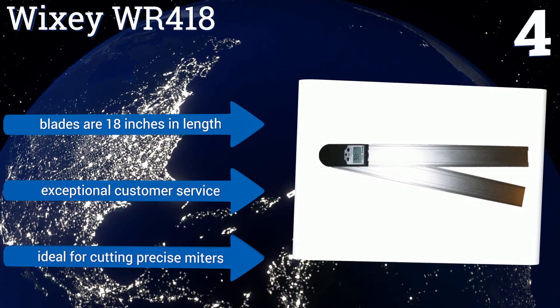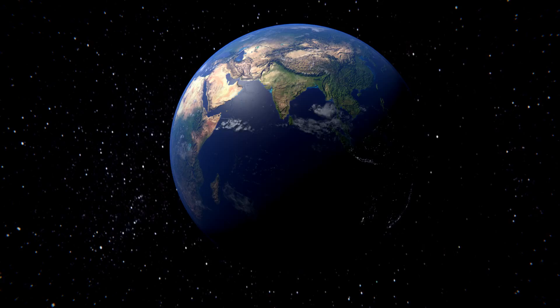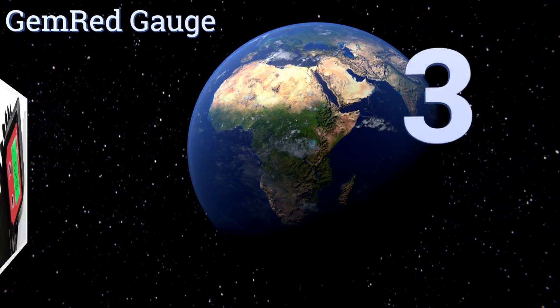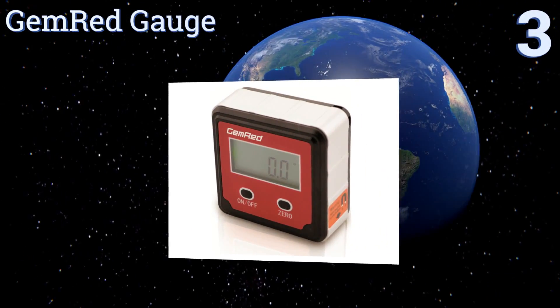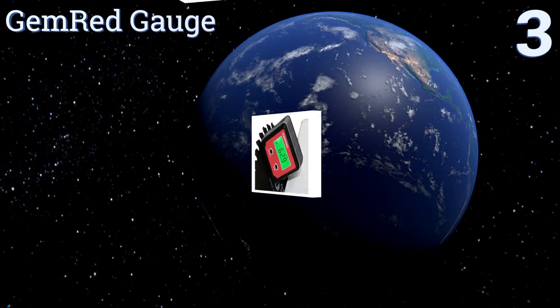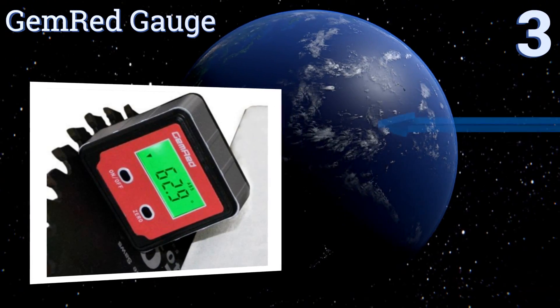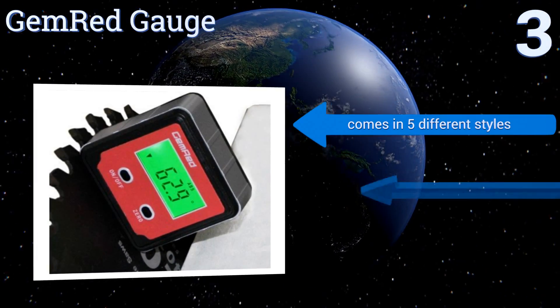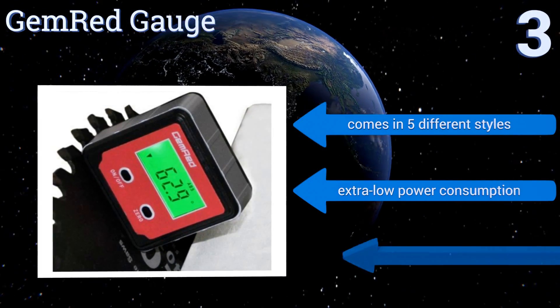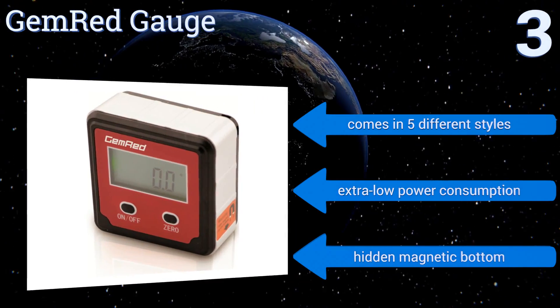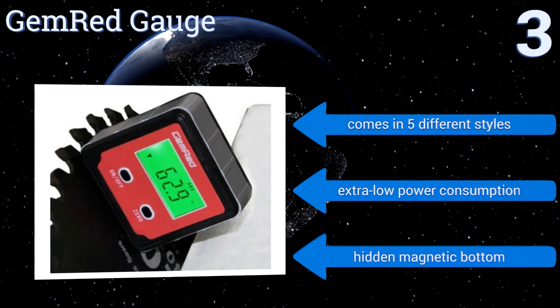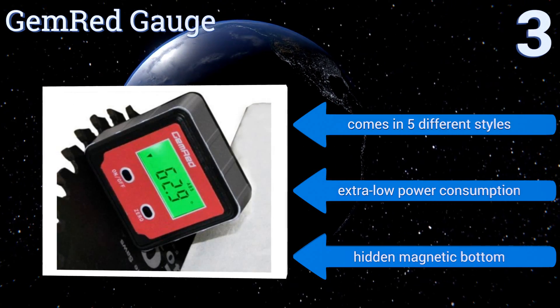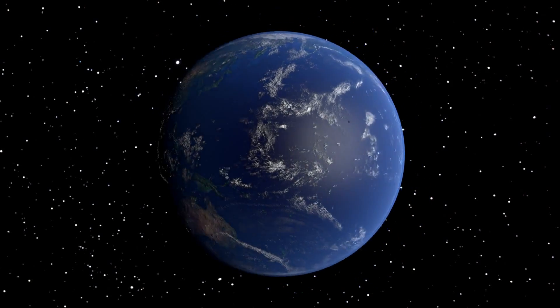Nearing the top of our list at number three, built in a rectangular shape with a durable framework, the GemRed Gauge is compact and easy to use, making it a solid option for setting saw blades, automobile tests and repairs, and similar applications. Its measurement response is nearly instantaneous. It comes in five different styles, all with a hidden magnetic bottom. It boasts extra low power consumption.